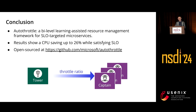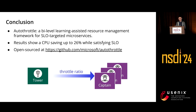In conclusion, AutoThrottle is a bi-level learning-assisted resource management framework for SLO-targeted microservices. Captains work at the service level using closed-loop control to quickly adjust CPU allocation. Tower works at the application level and uses the contextual bandit algorithm to determine the best throttle ratio targets for Captains. Results show that AutoThrottle saves up to 26% CPU resources while satisfying SLO, and we have open-sourced our code base.